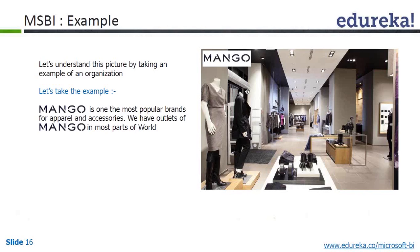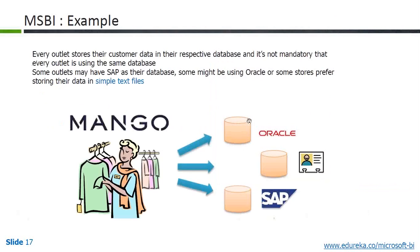If you see this picture, they are selling a lot of apparels and accessories. This Mango store is located in different parts of the world — say, four parts of India, ten parts of the US, a couple of parts in Singapore, five parts in the Middle East and Europe. So this is covering the world. Every outlet stores their customer data in their respective database, and it's not mandatory that every outlet is using the same database.